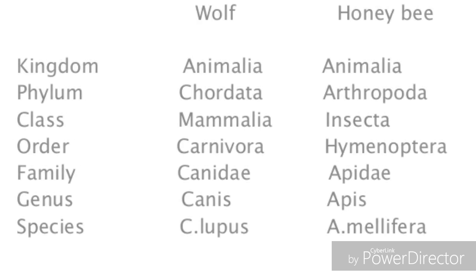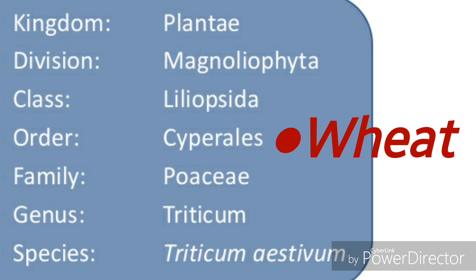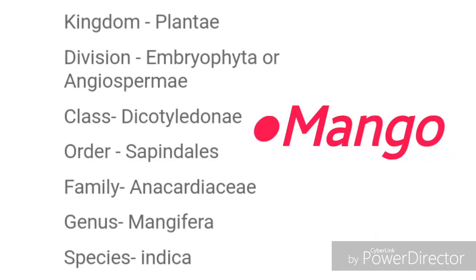Now let us see two plant examples. The first one is wheat; the scientific name of wheat is Triticum aestivum. In plant classification, instead of the category phylum, division is used. The second example is mango; the scientific name of mango is Mangifera indica. Here, for both examples, you can see hierarchical classification.